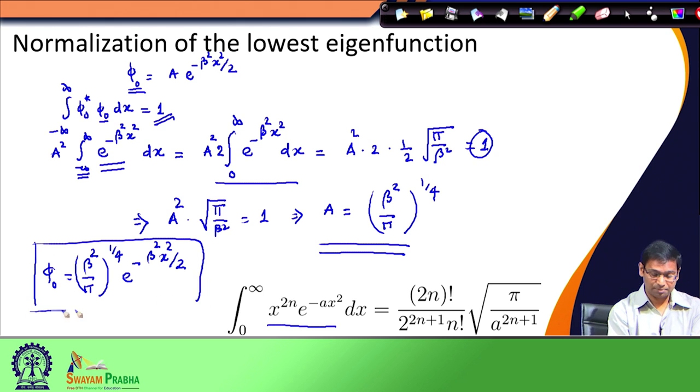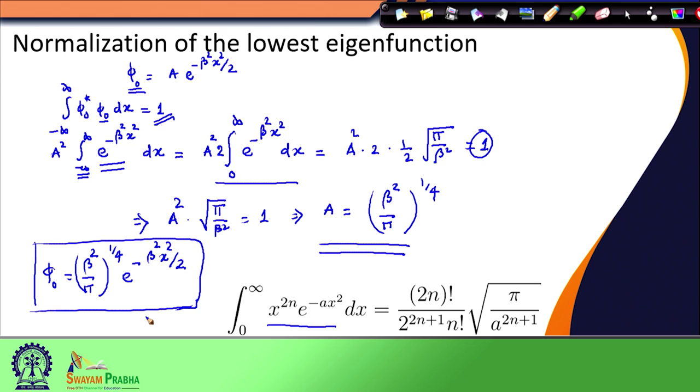In today's class we discussed the eigenvalues of the harmonic oscillator problem, the functional form of the lowest eigenfunction φ₀, and we normalized this lowest eigenfunction. In the next class we will continue our discussion on the other eigenfunctions of the harmonic oscillator problem. Thank you for your attention.